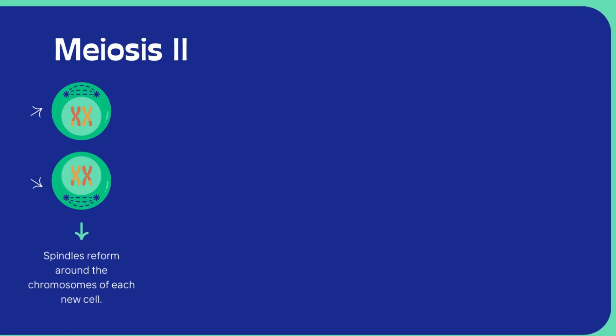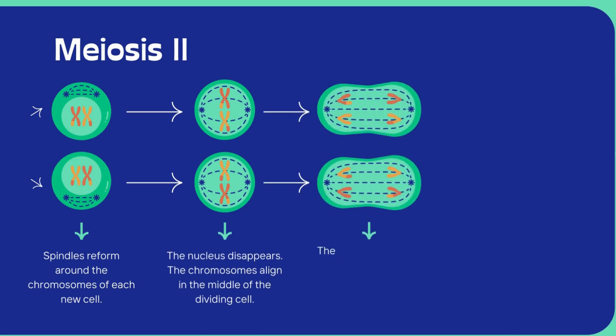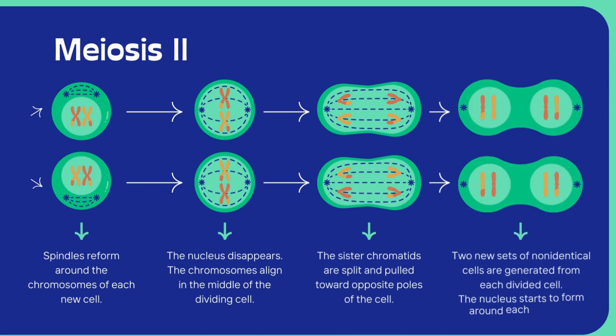The spindle reforms around the chromosomes of each new cell. In the second step, the nucleus disappears and chromosomes align in the middle of the dividing cells. The sister chromatids are split and pulled toward opposite parts of each cell. Two new sets of non-identical cells are generated from each dividing cell, and the nucleus starts to form around each new cell.